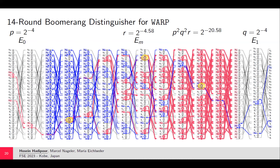Loic added a clarification: the main difference between the two approaches is that when computing distinguisher probability, their work computes the probability of a characteristic — fixing each difference at every round — whereas Hadipour et al. compute the experimental probability of the distinguisher itself, obtaining a better approximation closer to the actual value. That is likely the main reason for the probability difference. Thanks to all speakers, and the session concluded with a lunch break.